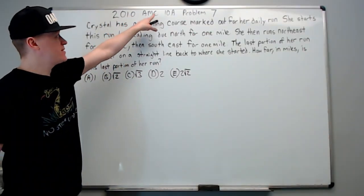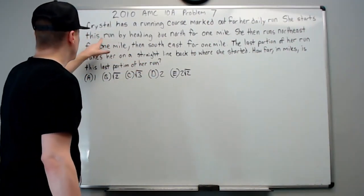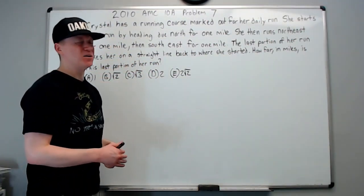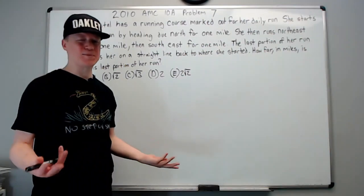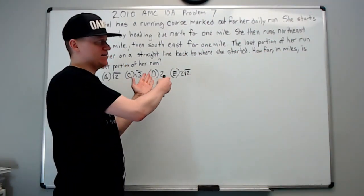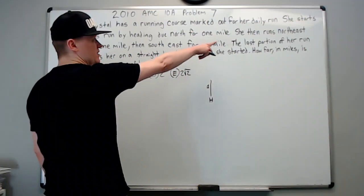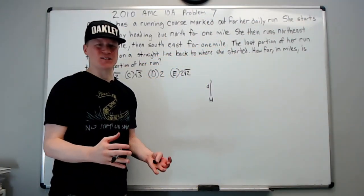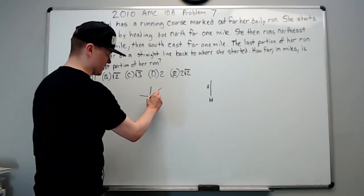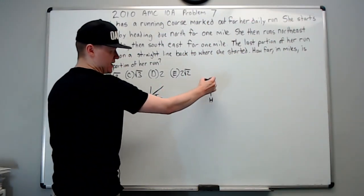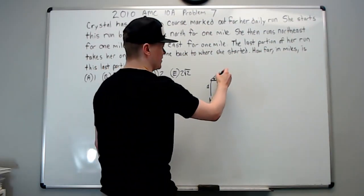Now on to 2010 AMC 10A problem 7. Crystal has a running course marked out for her daily run. She starts by heading north for one mile. Before reading further, you should understand it's some kind of map diagram. You're not going to hold the whole thing in your head, so just get started making it as you read. She starts at home, goes north one mile, then runs northeast for one mile. You should understand it's implied with northeast that it's 45 degrees to the horizontal.